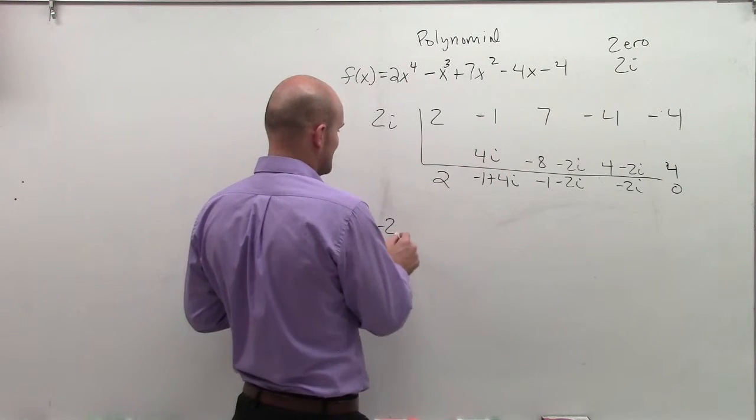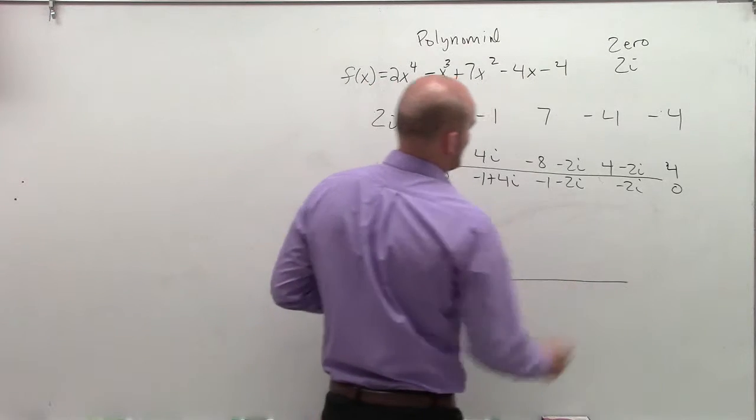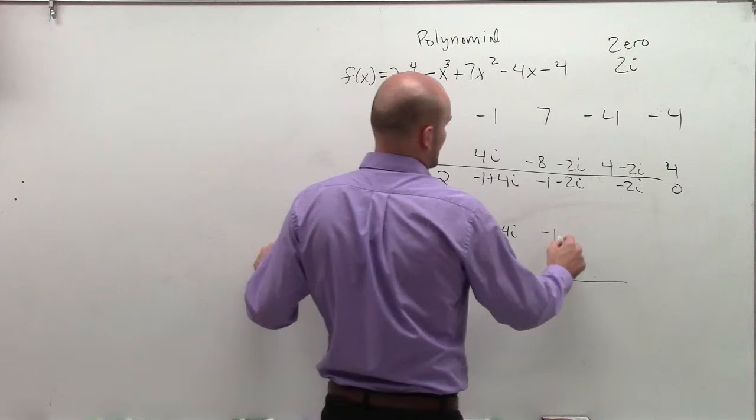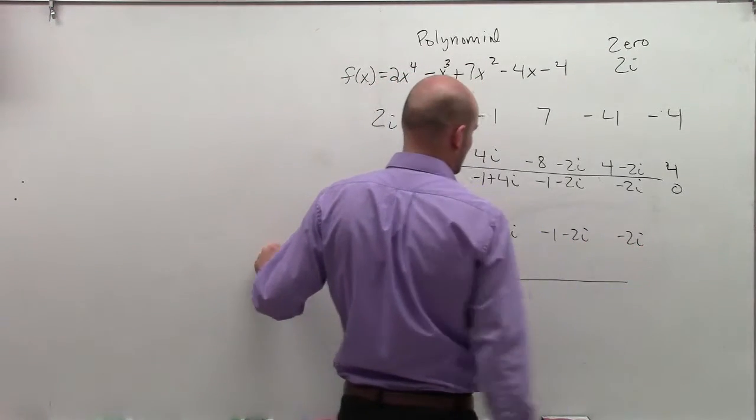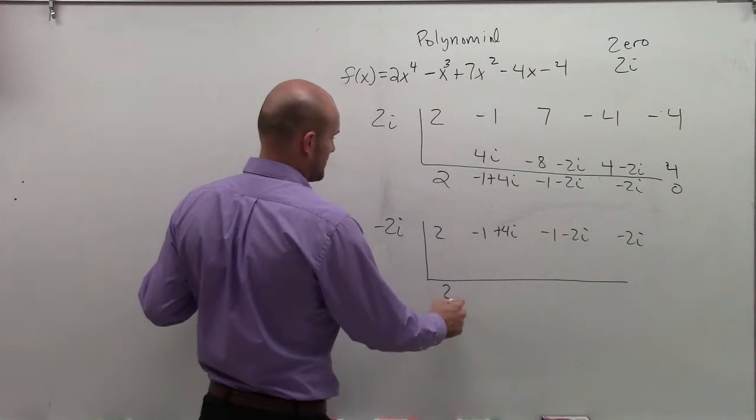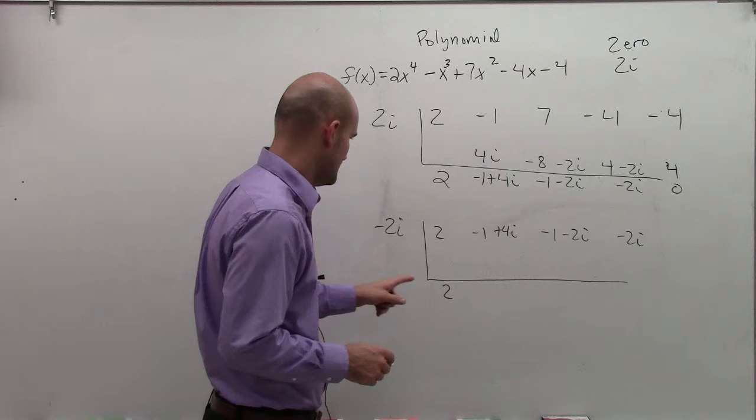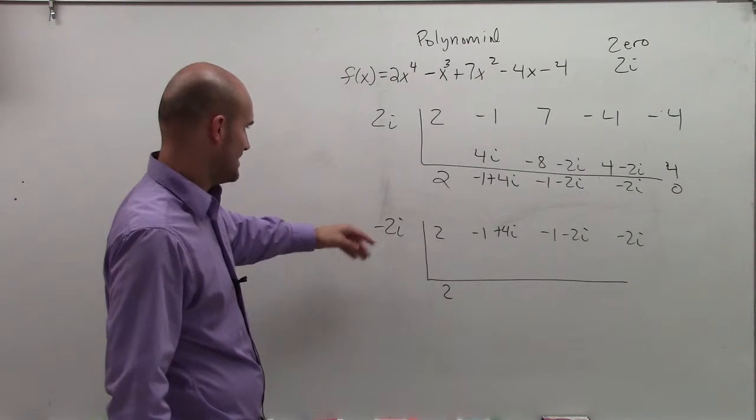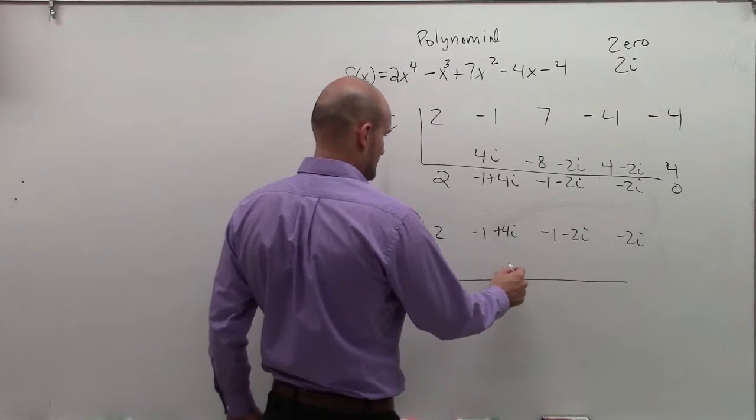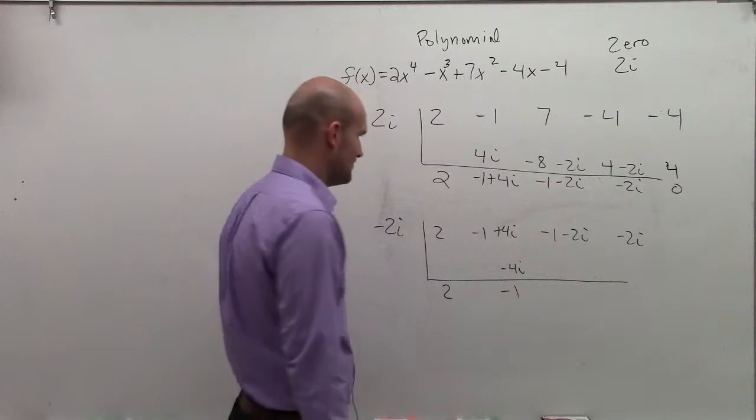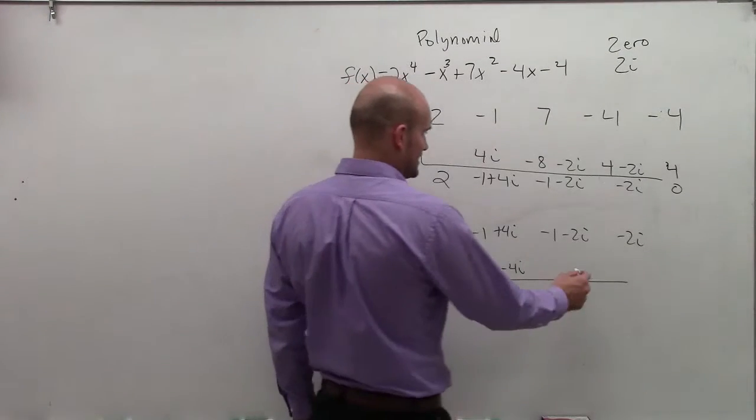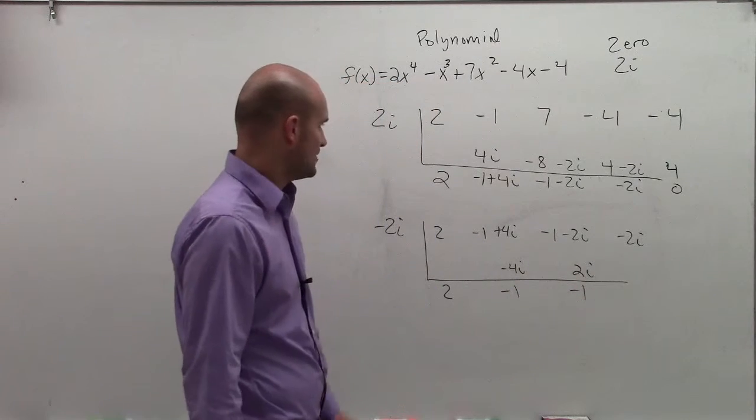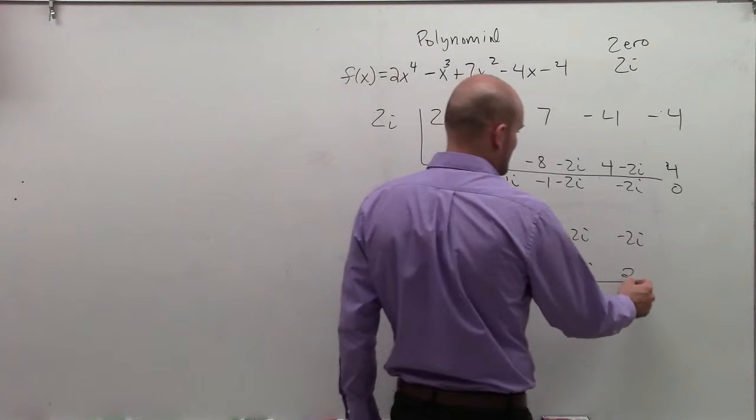So I'm going to do the exact same thing now with negative 2i. So I just write in 2, negative 1 plus 4i, negative 1 minus 2i, negative 2i. So again, I bring down the 2. 2 times negative 2i is going to give me negative 4i, which just leaves me with negative 1. Negative 1 times negative 2i is just going to leave me with 2i. So then I have minus 1, and negative 1 times negative 2i is going to leave me with positive 2i.